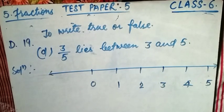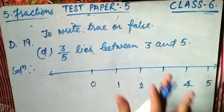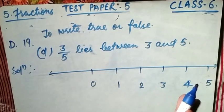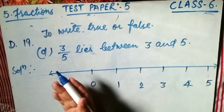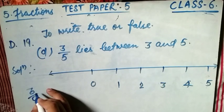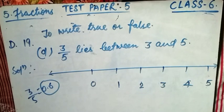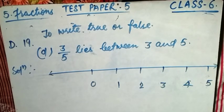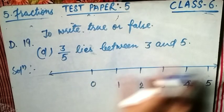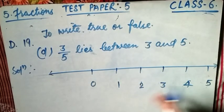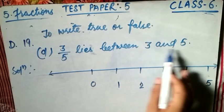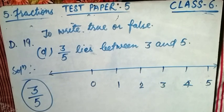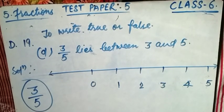Now Question 19, true or false. Sub-question D: 3/5 lies between 3 and 5 — is this true or false? We can check directly: 3 divided by 5 equals 0.6. We can also use the number line method: draw a number line from 1 to 5, since we need to check if 3/5 lies between 3 and 5.